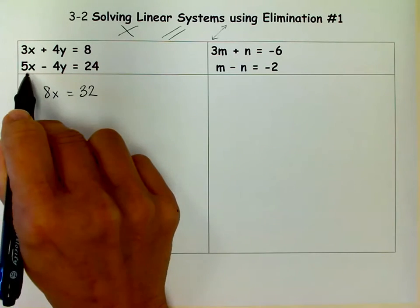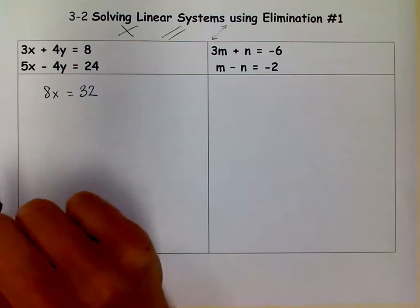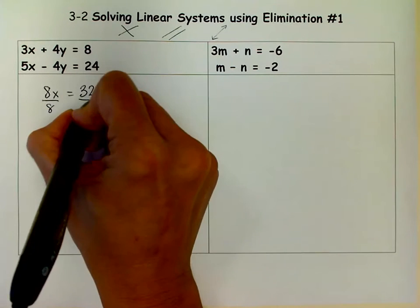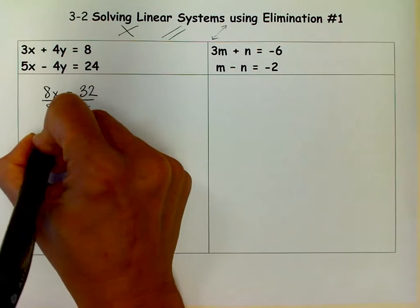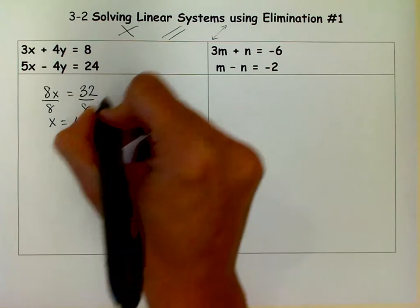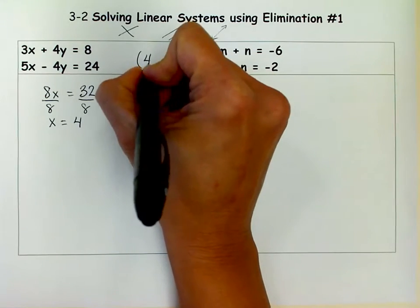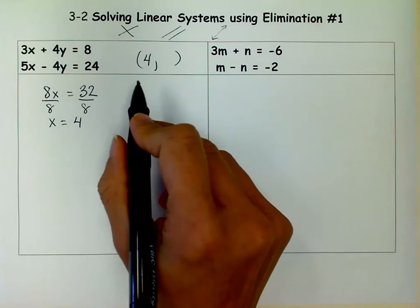So when I added, I get 8x, the y's canceled, and I get 32. So to find my x, I divide both sides by 8, and I get x equals 4. So I know now I have a solution, and that the x-coordinate is 4.